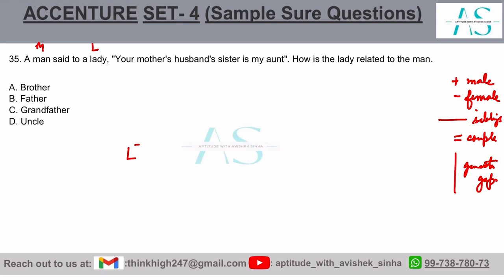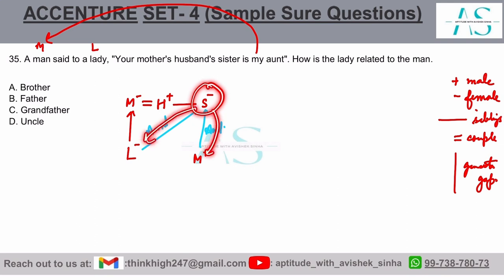Man said to a lady, your mother's husband. So the lady's mother's husband's sister is my aunt. My refers to the man. Man's aunt is this person. Now talking about the lady, this person is also the aunt of the lady. So if this person is the aunt of the man as well as the lady, these two must also be related as siblings. Yes or no?